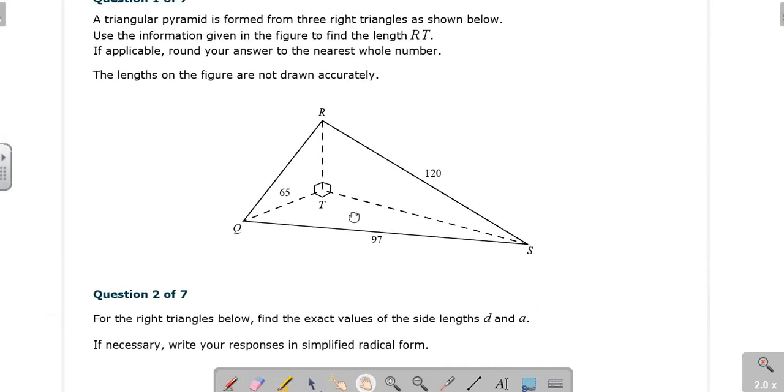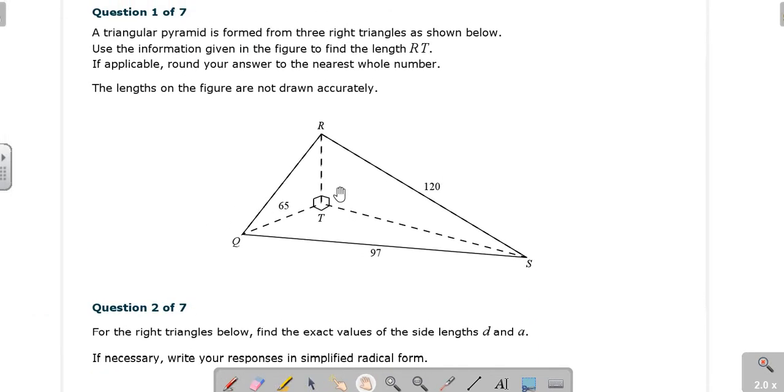For this particular diagram, it says a triangular pyramid is formed by three right triangles shown below. Use the information given in the figure to find RT. So RT is our ultimate unknown here. If applicable, round your answer to the nearest whole number. So we have three different triangles here: a blue triangle, a yellow triangle, and a green triangle.